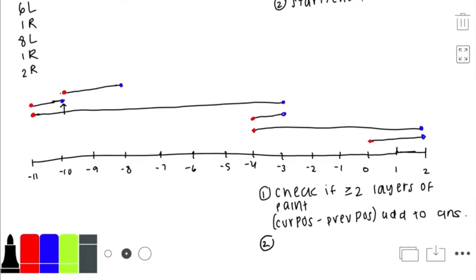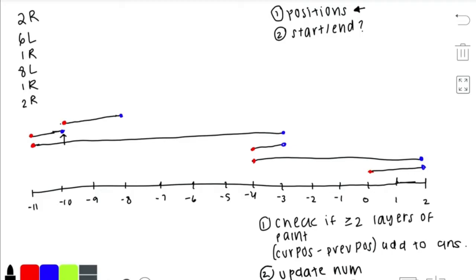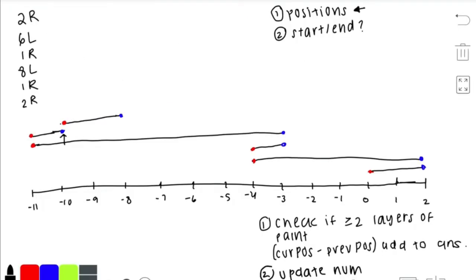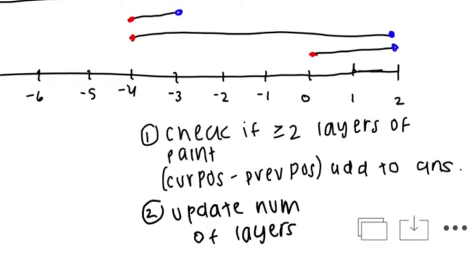The second thing we do in each iteration is update the number of layers of paint: if it's a start point, we add one; if it's an endpoint, we subtract one. To summarize our approach: first, generate all segment endpoints, tracking each point's position and whether it's a start or end point. Second, sort these points from least to greatest. Third, iterate through all points in sorted order — check if there are at least two layers and add to the answer using the distance formula, then update the layer count. At the very end, output the answer.